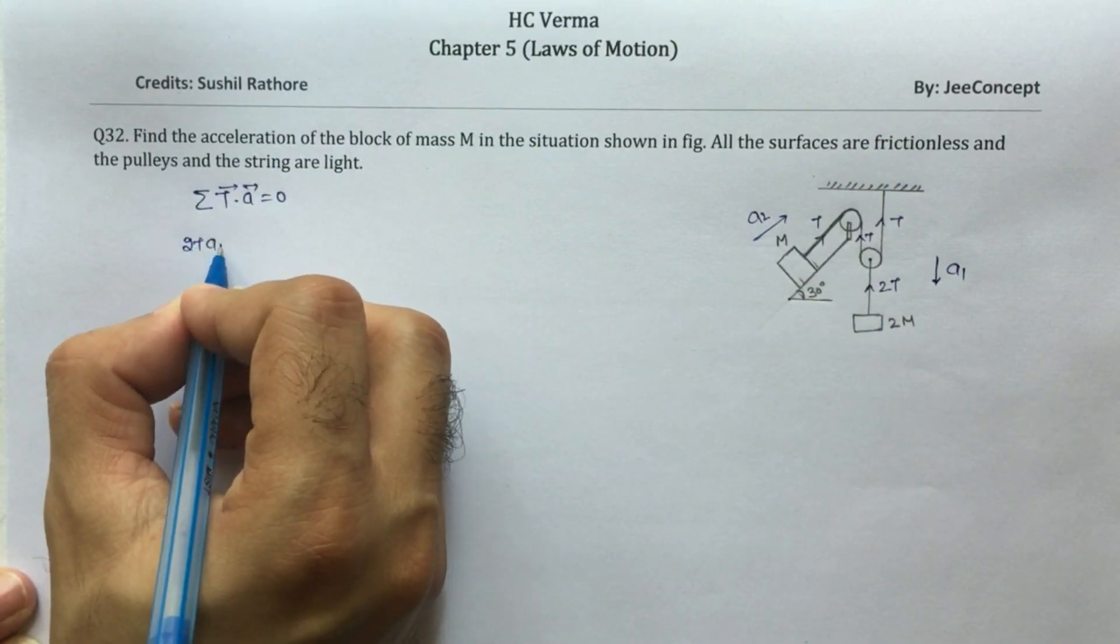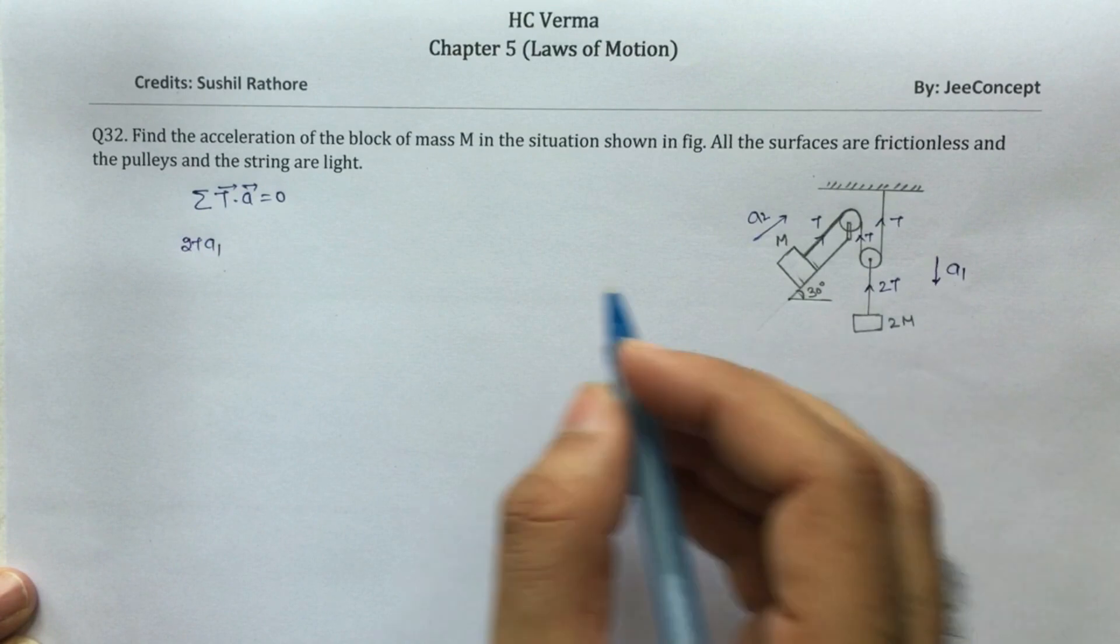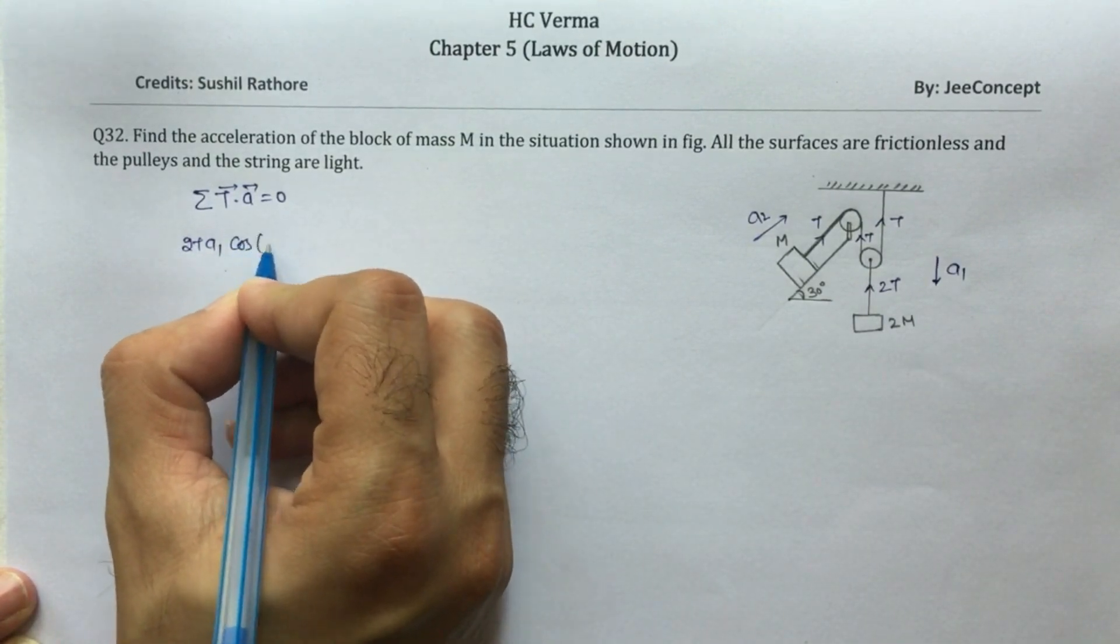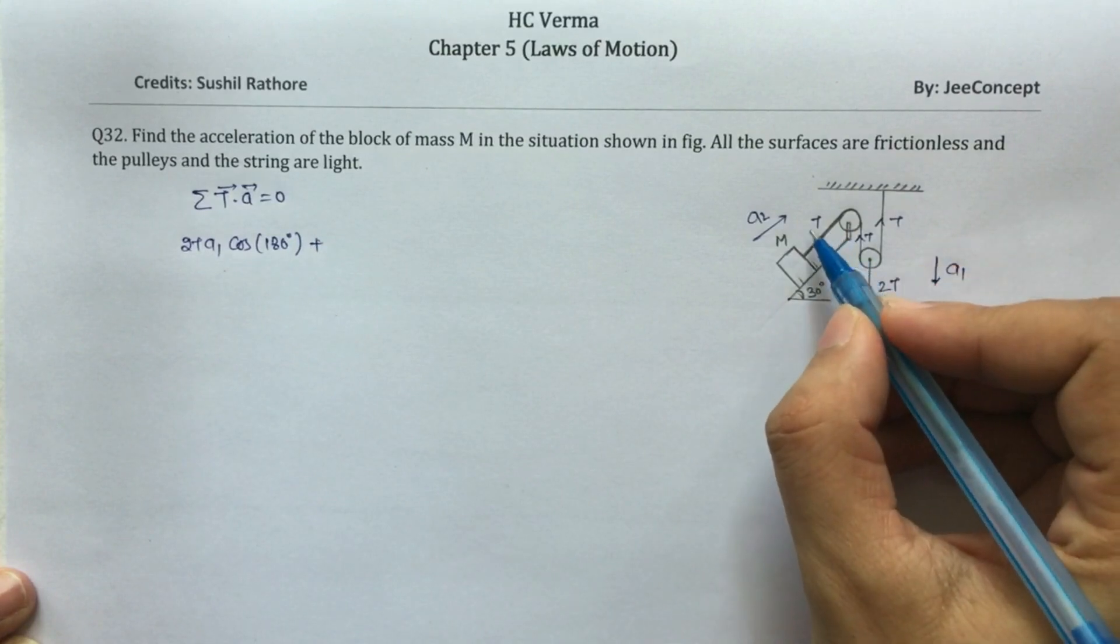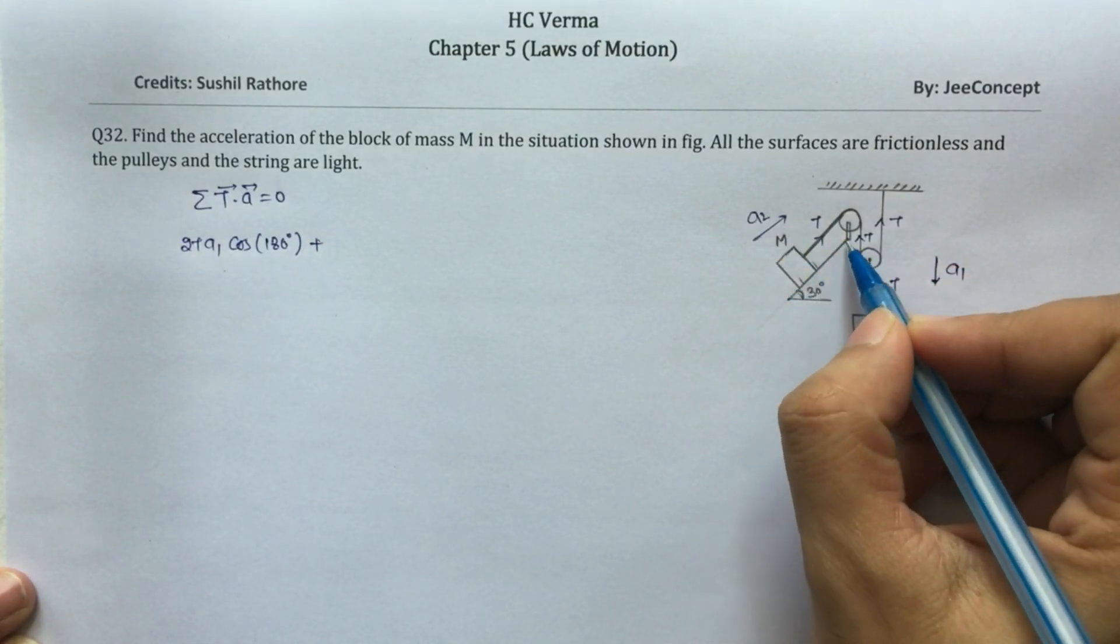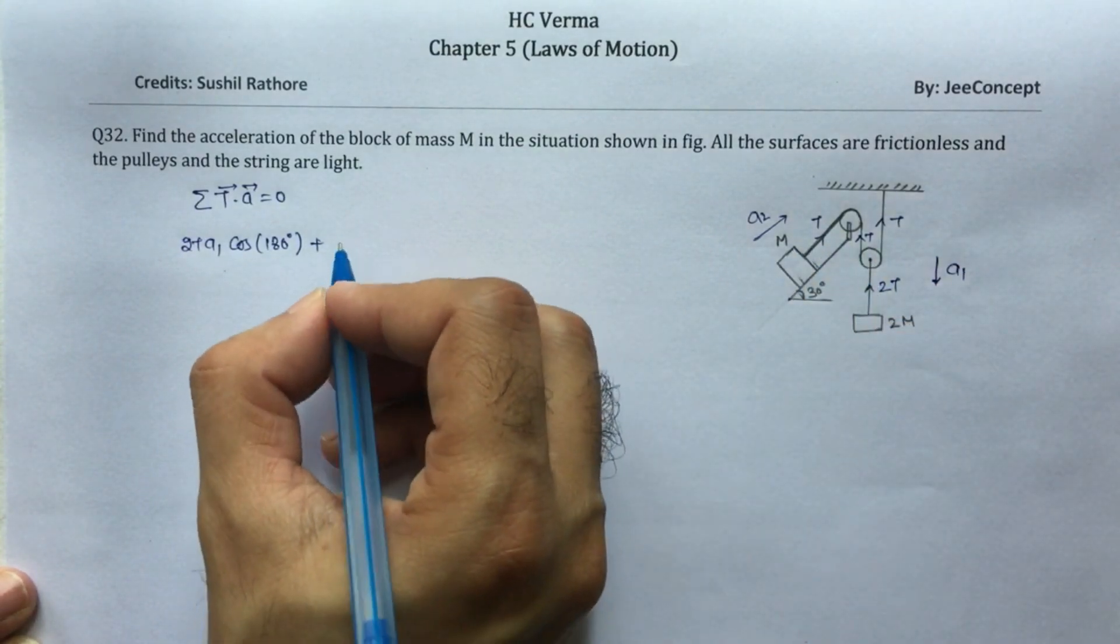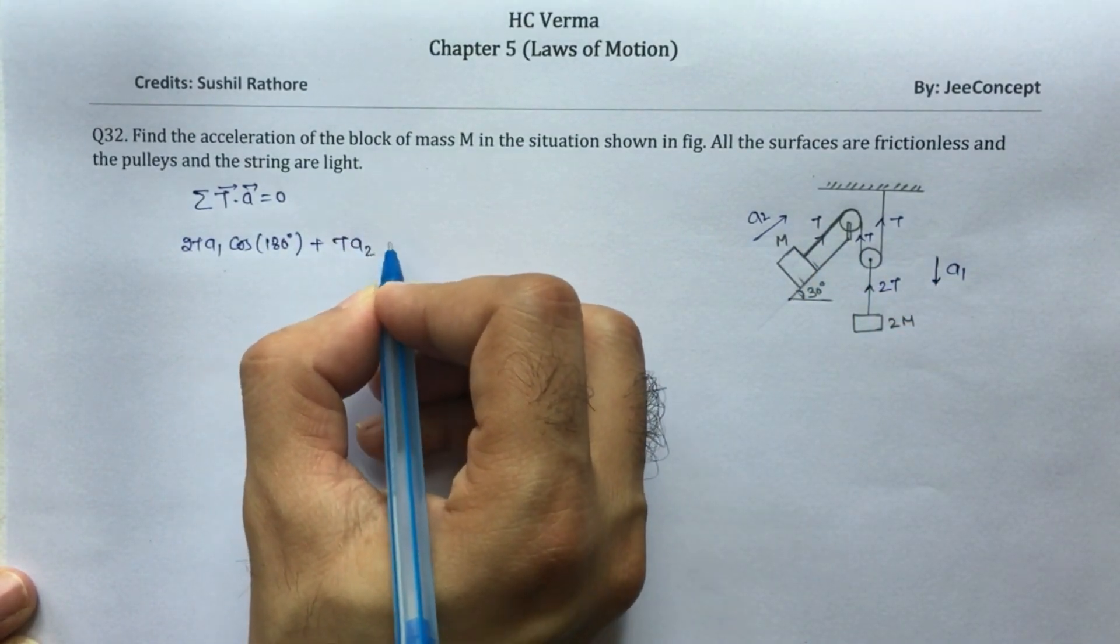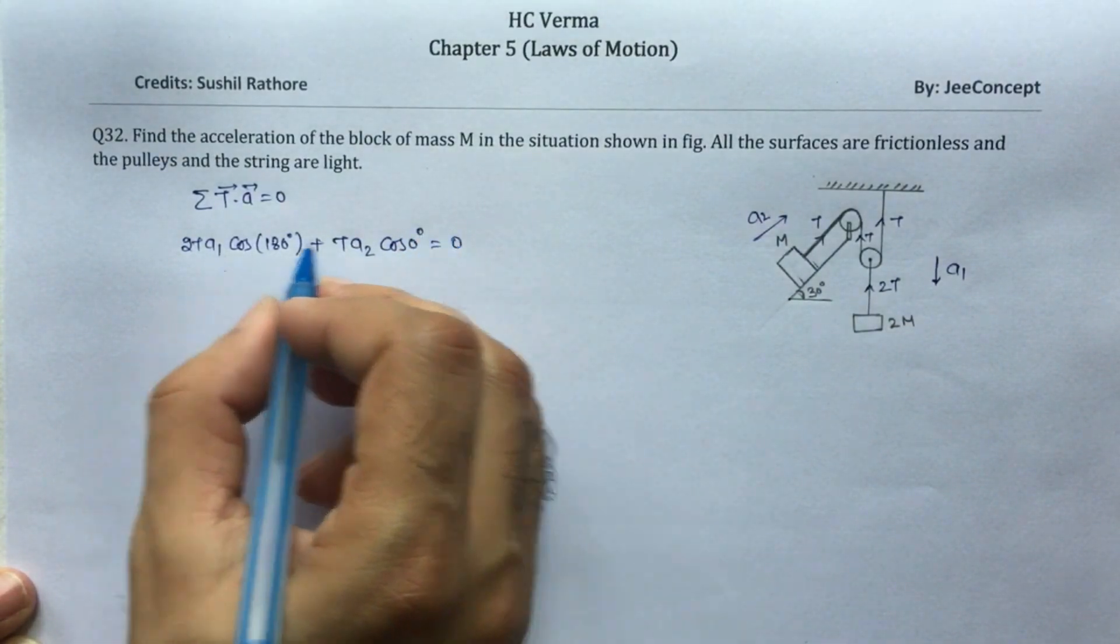Now for this tension 2T and a1, the angle between the tension and the acceleration is 180 degrees, so it is going to be 2T·a1·cos(180°) plus T and a2 is acting along the slant so the angle between these two is 0 degrees, so this will become T·a2·cos(0°) equals 0.